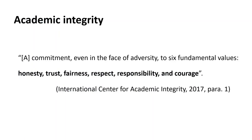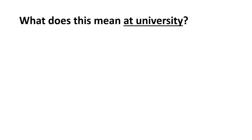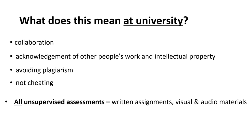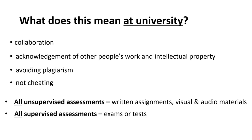Academic integrity is based on six values. At university this means acting with integrity in terms of collaboration, which includes working on group assignments, acknowledging other people's research and intellectual property, avoiding plagiarism and not cheating. This applies to all unsupervised assessments, for example written assignments or visual and audio materials created for assessments, and all supervised assessments, for example exams or tests.